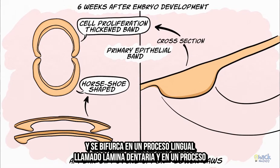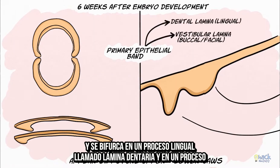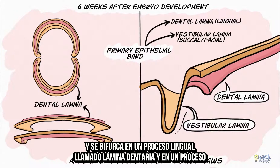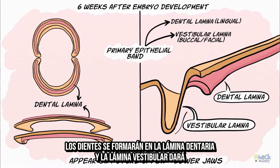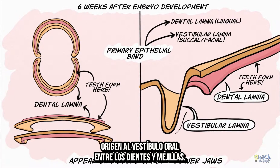This epithelial band bifurcates into a lingual process called the dental lamina and a buccal or facial process called the vestibular lamina. It is on the dental lamina that the teeth will form, and the vestibular lamina will eventually give rise to the oral vestibule between the teeth and the cheeks.